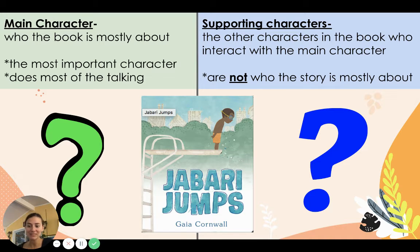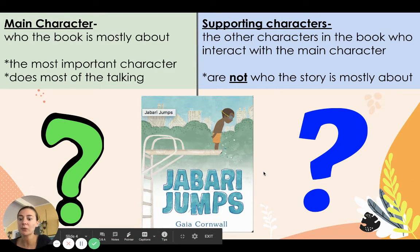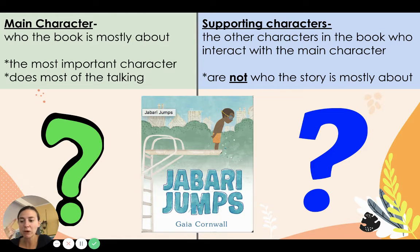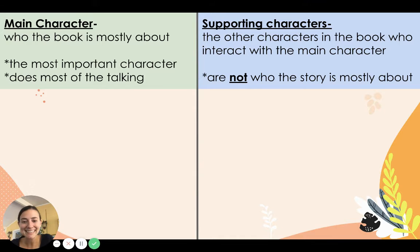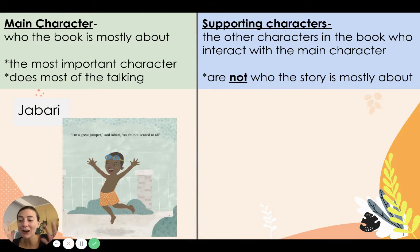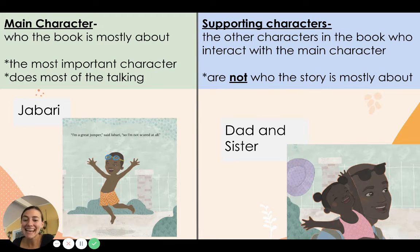Now let's look at some more examples and see if we can figure out which character is the main character and which is the supporting character. Let's look at Jabari Jumps — we've been going over this book in labs together. In Jabari Jumps, who do you think is the main character, and who are the supporting characters? Yes! Jabari is the main character. He is who the book is mostly about — he's even on the cover page and in the title, just like D.W. All Wet. Dad and sister are the supporting characters. They go to the pool with Jabari and watch him jump, but they are not who the story is mostly about.